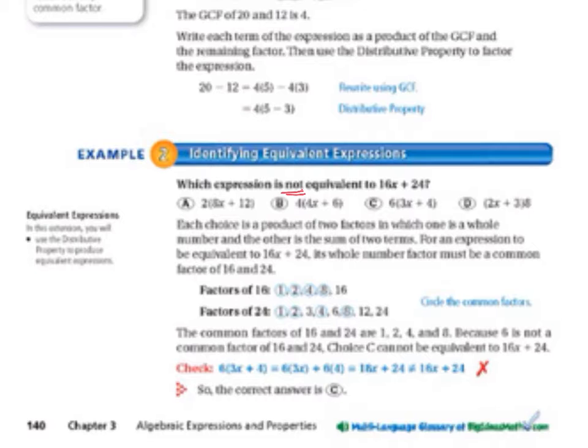It says each choice is a product of two factors in which one is a whole number, and the other is the sum of two terms. We see that we've got a whole number on the outside of the parentheses, and then two things on the inside of the parentheses. That's all that that sentence is saying.